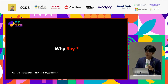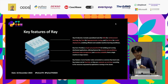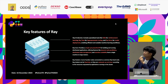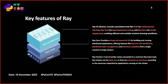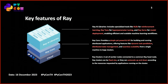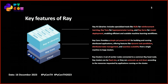Why Ray? Let me expand on the key features of Ray. There are three main features. First is the Ray AI library, which includes specialized tools like RLlib for reinforcement learning, Ray Tune for hyperparameter tuning, and Ray Serve for model deployment. You can also use Ray Train and Ray Data to provide and manage data within the Ray platform.